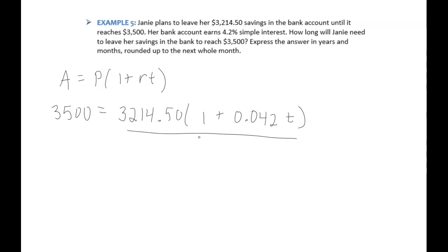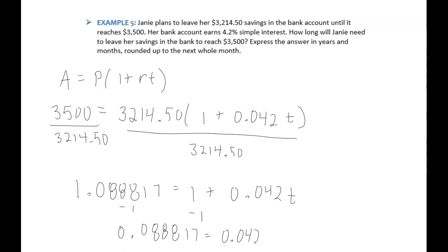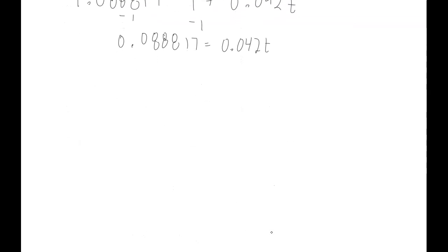So the first thing I would do here is divide both sides by $3,214.50. So that gives on the left hand side here 1.088817. And then that equals 1 plus 0.042t. Next thing I would do is I would want to subtract 1 from each side, and then divide by this 0.042. So subtracting 1 from each side gives 0.088817. And that equals 0.042t.